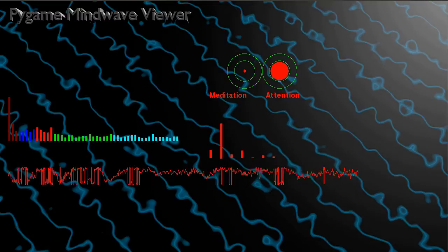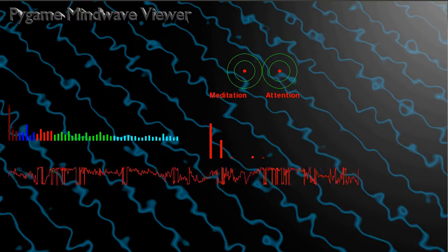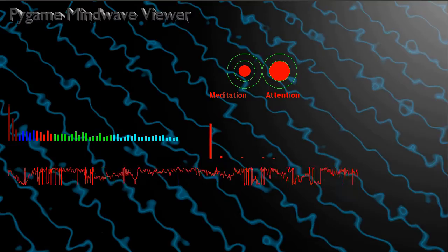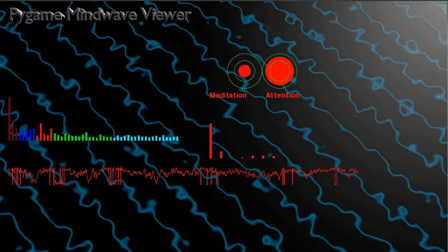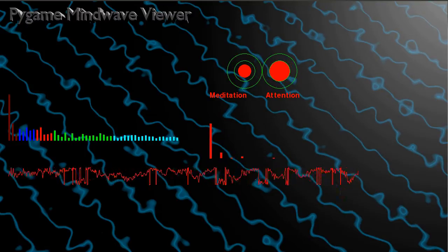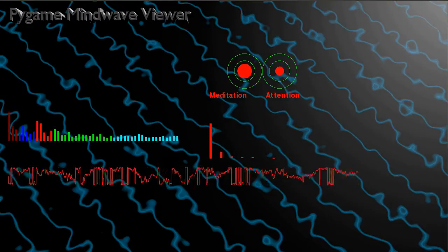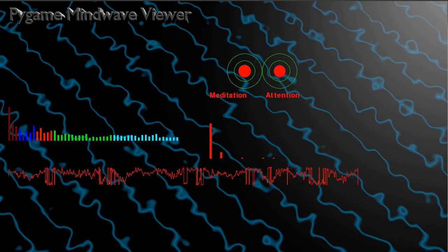These waves are the direct output from the MindWave headset and these are computed at about 512 Hz, that is 512 values per second.